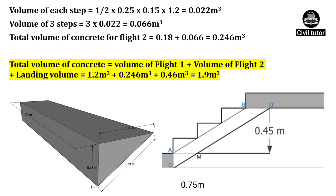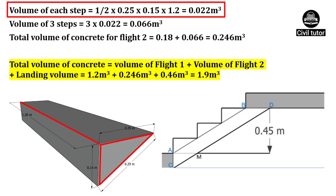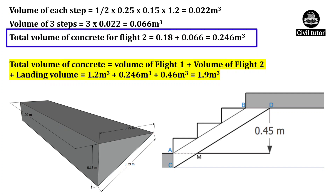Finally, we need to calculate the volume of three steps. Volume of each step will be equal to area of cross section of this step, which is a triangular section, multiplied by width of flight. Area of cross section of each step will be equal to one-half multiplied by base, which is tread length 0.25 meter, multiplied by height, which is rise 0.15 meter. So volume of each step will be equal to 0.022 meter cube. The volume of three steps will be equal to 3 multiplied by 0.022, which equals 0.066 meter cube. So the total volume of concrete for flight 2 will be equal to volume of concrete for waist slab, 0.18 meter cube, plus volume of concrete for three steps, 0.066 meter cube, giving a total volume of 0.246 meter cube.